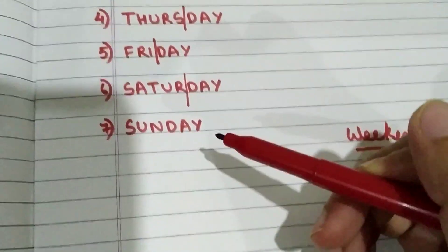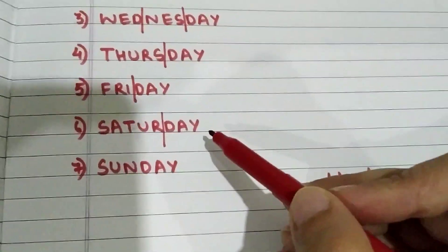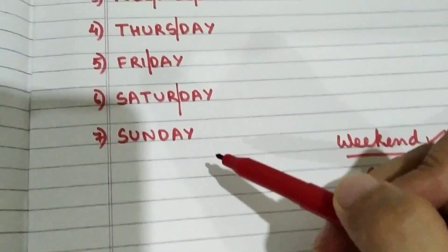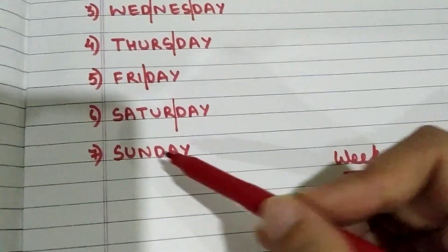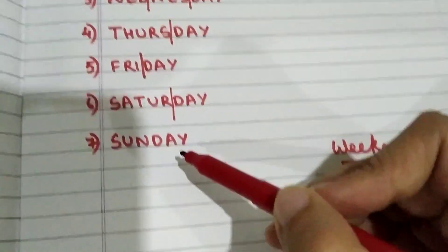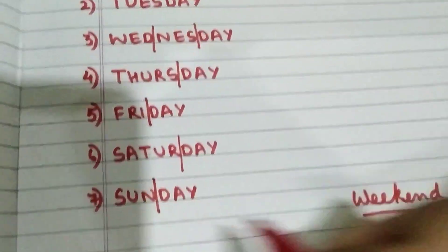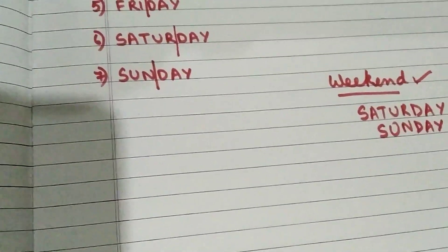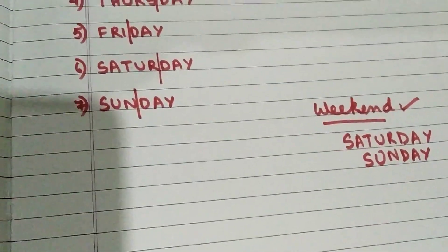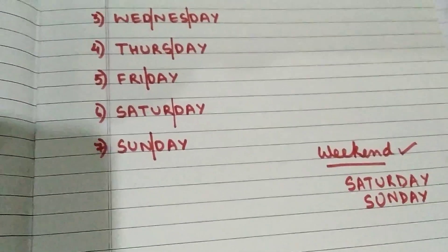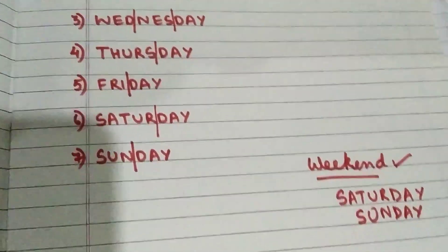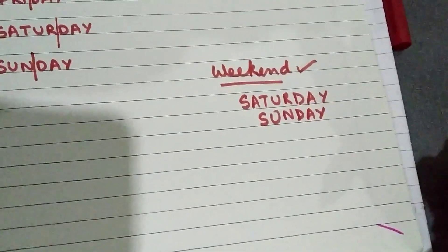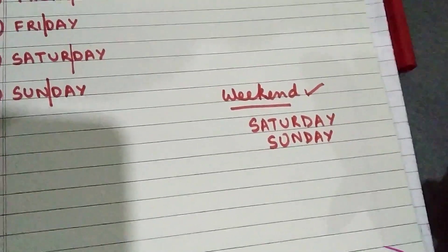Saturday: S-A-T-U-R-D-A-Y, Saturday. Now the last day of the week is Sunday. S-U-N, that is 'sun' — very simple. What is the spelling of sun? S-U-N, and after sun you write D-A-Y, so it is Sunday. Sunday is the simplest spelling of all, and Sunday is also a weekend.